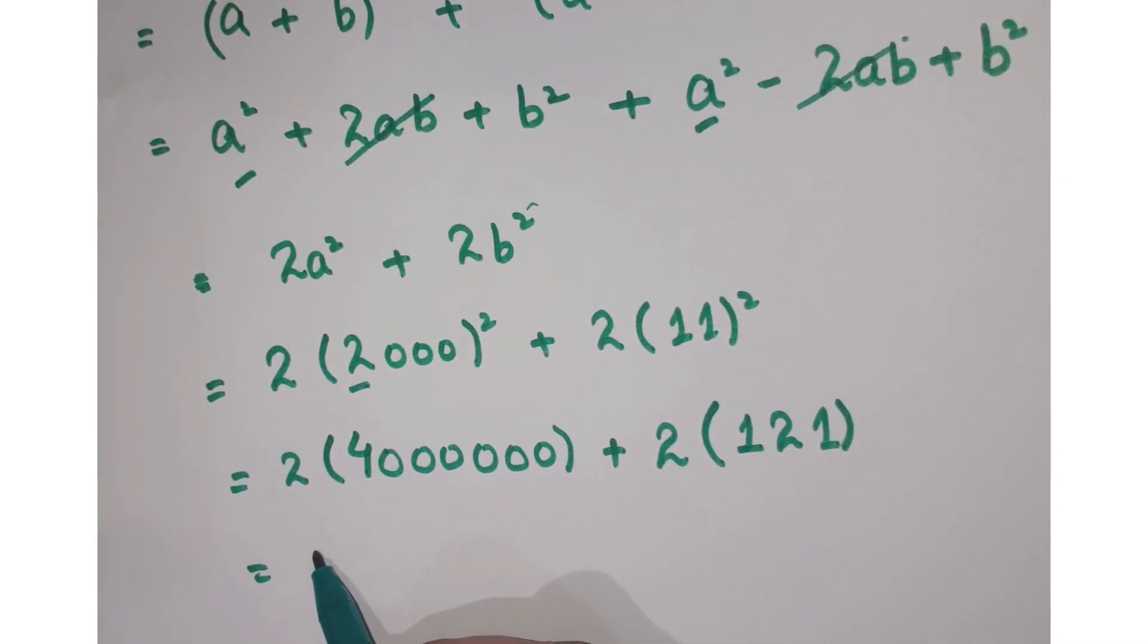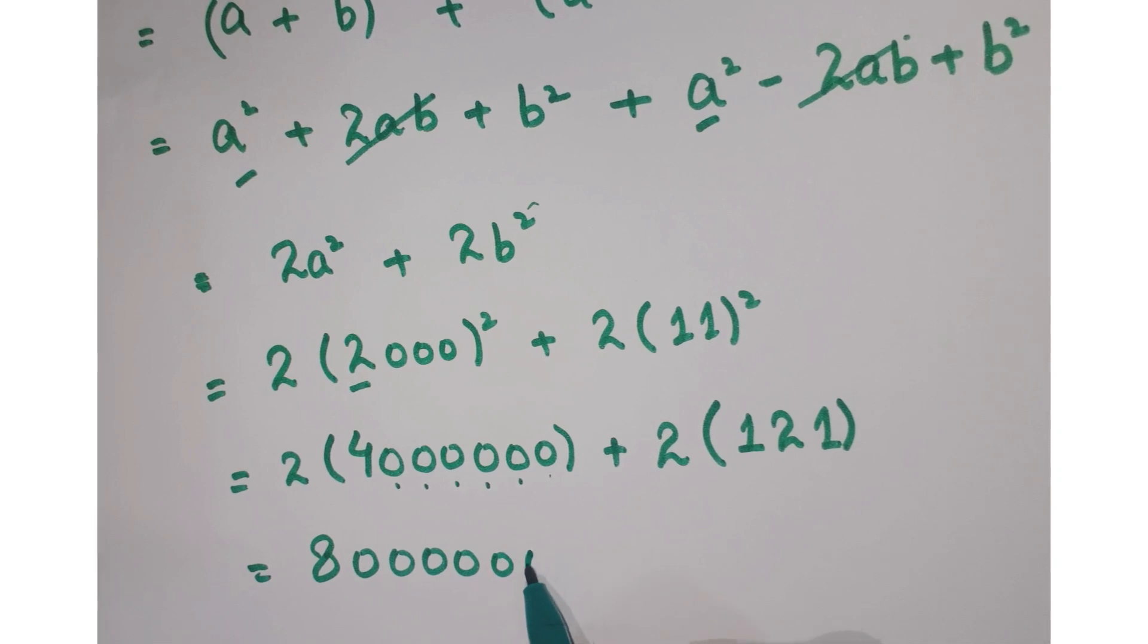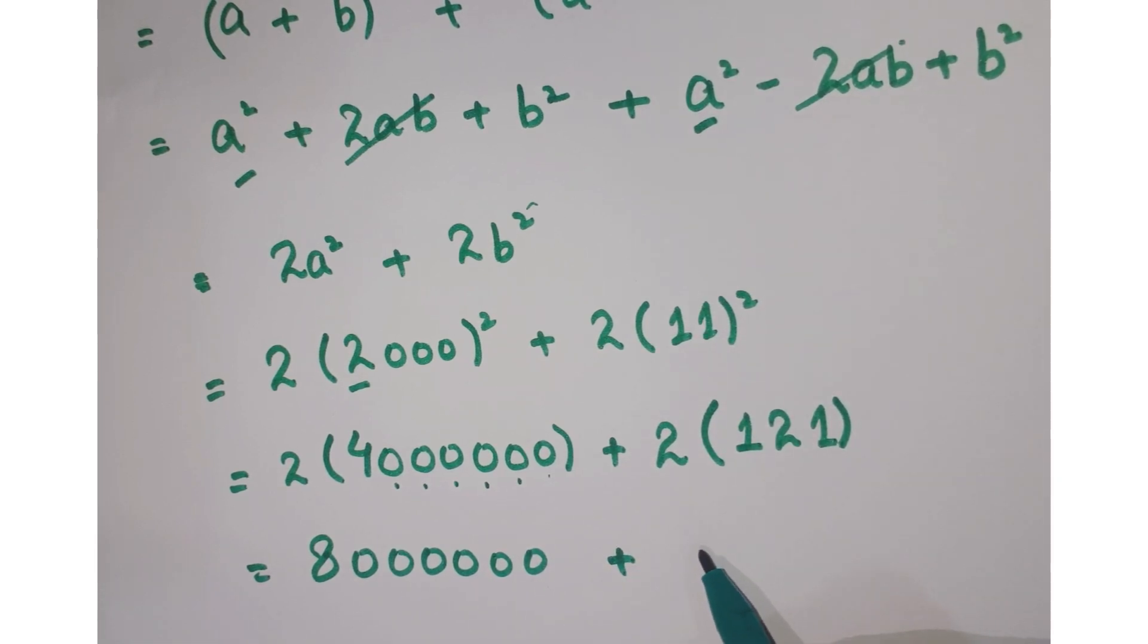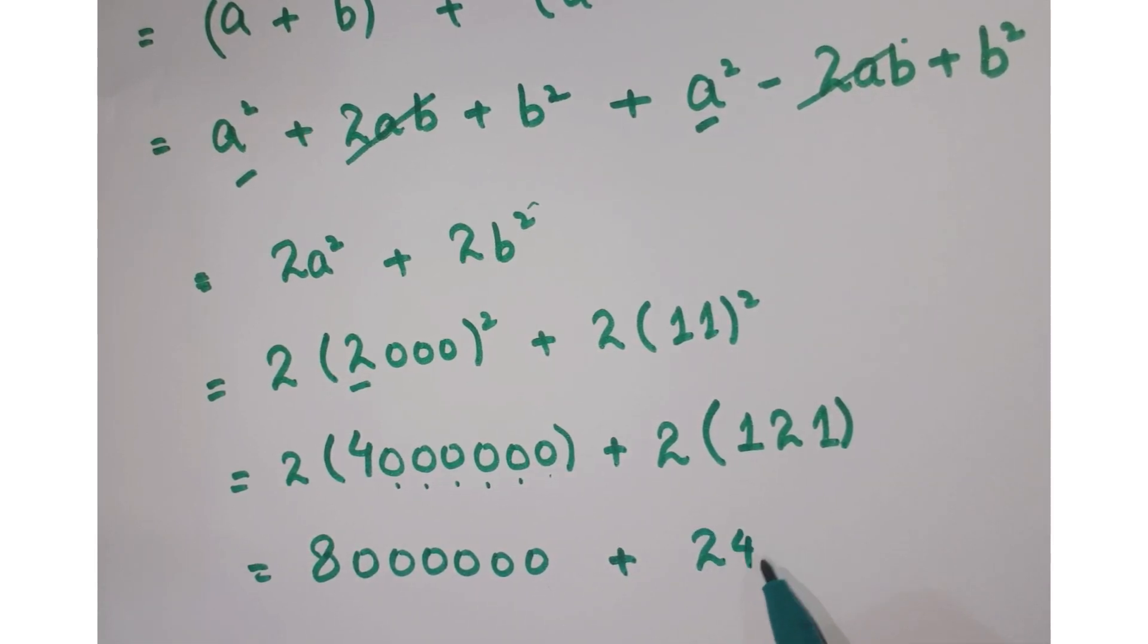Further, just multiply 2 with 4, you get 8 with 6 zeros. And you multiply it, you get 242.